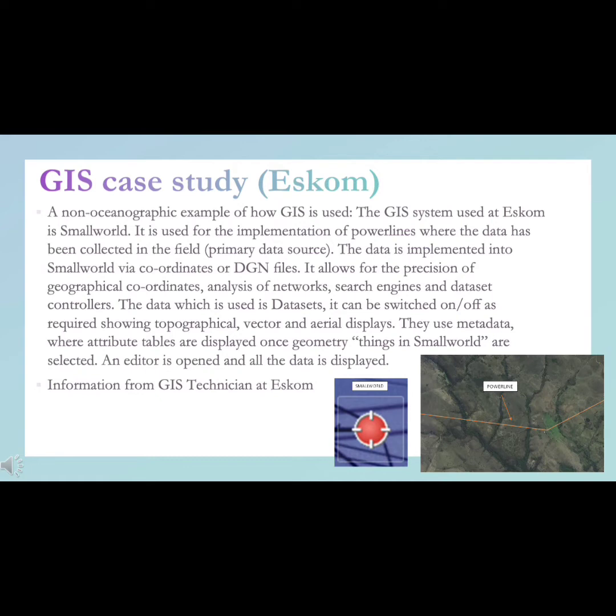SmallWorld allows for the precision of geographical coordinates, analysis of networks, search engines, and data set controllers. The data which is used is called data sets. It can be switched on and off as required, showing topographical vector and aerial displays. They use metadata where attribute tables are displayed once geometry, which are things in SmallWorld, are selected. An editor is opened and all the data is displayed.